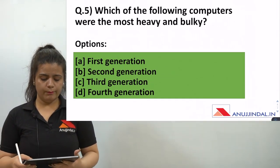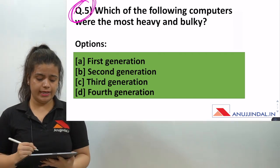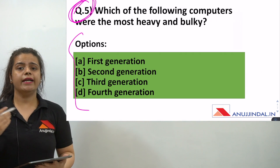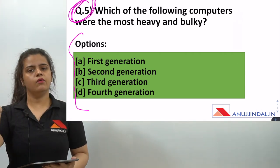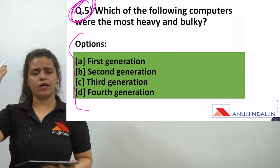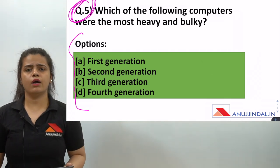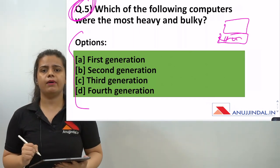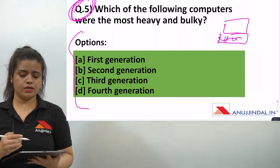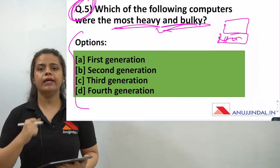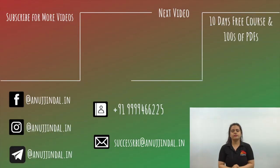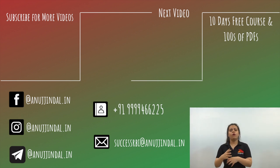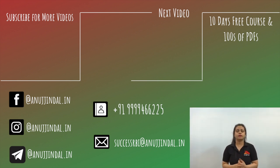The fifth question is: which of the following computers were the most heavy and bulky? The hint is: the older the computer, the more bulky it is. The older the generation, the more bulky the machine. In computers, you will get questions about definitions, videos, networks, information, abbreviations, and domain names like .com, .net, and .gov.